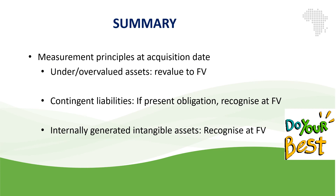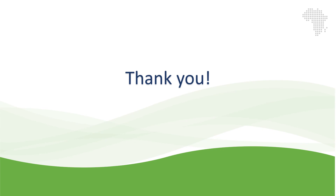In summary, we have learned in this lesson that under or overvalued assets of the subsidiary at acquisition date must be revalued to their fair value. Any contingent liabilities in the acquiree must be recognized at the date of acquisition at their fair value if they are a present obligation. Internally generated intangible assets of the subsidiary must also be recognized at fair value as part of the business combination. All of these adjustments may attract deferred tax depending on the future tax consequences of those adjustments. I hope you have learned how to apply the measurement principle of IFRS 3 and I wish you well with your studies.